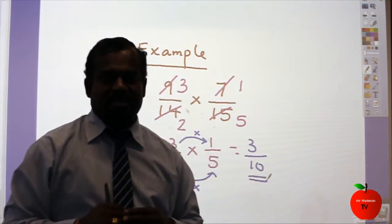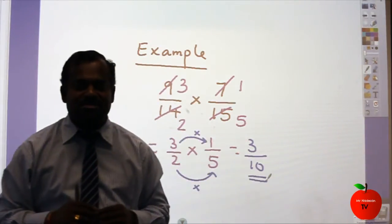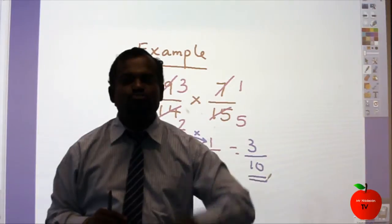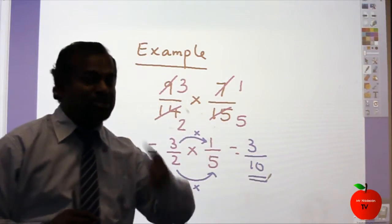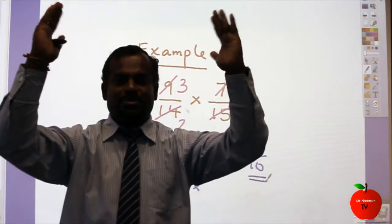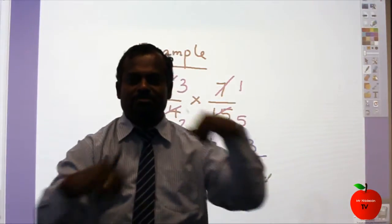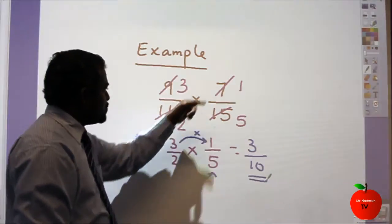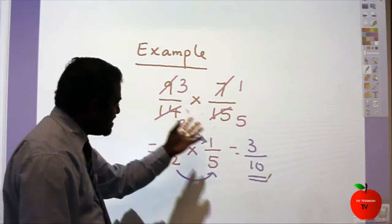The first point you should know with multiplying fractions: if you've got any mixed numbers, you must convert to the improper fraction. Once you've done that, follow the steps — top, bottom, then cross. If you can't simplify top and bottom, then you look for the cross.